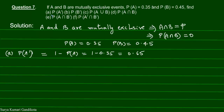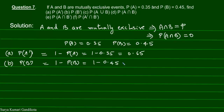The second part is P(B complement). P(B') is equal to 1 minus P(B), which is equal to 1 minus 0.45, and this gives us 0.55.